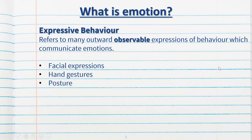Then we have the third element, which is expressive behavior. This refers to the many outward observable expressions of behavior which communicate emotions. The key word is observable — we need to be able to watch and observe it as scientists. This can include facial expressions such as smiling, frowning, baring our teeth, hand gestures such as a thumbs up, and of course our posture. A slumped posture may indicate that a person is feeling shy or afraid, whereas a very upright posture may indicate they're feeling confident and happy. It needs to be something we can observe; otherwise it's considered a physiological response or a subjective feeling.